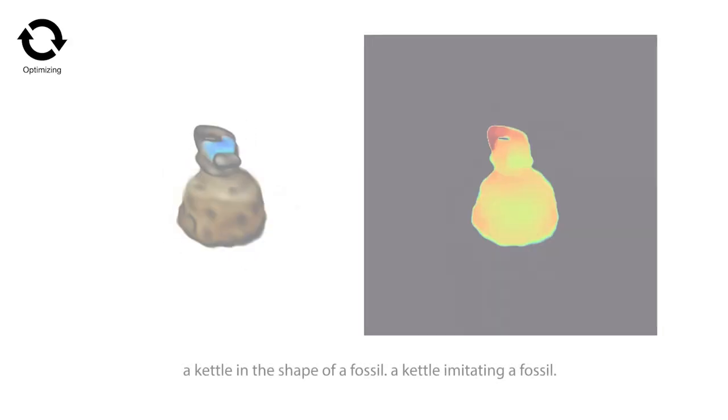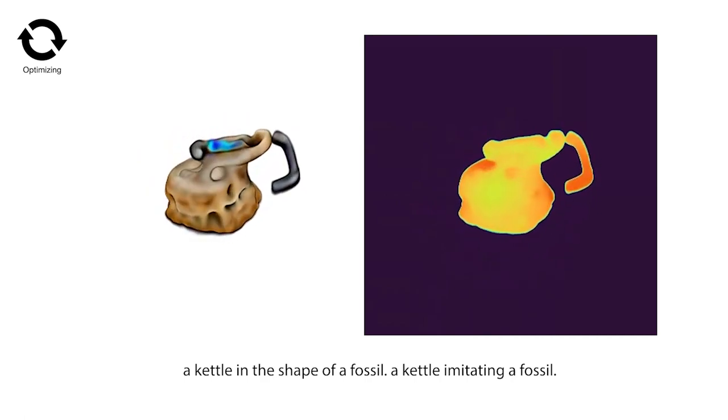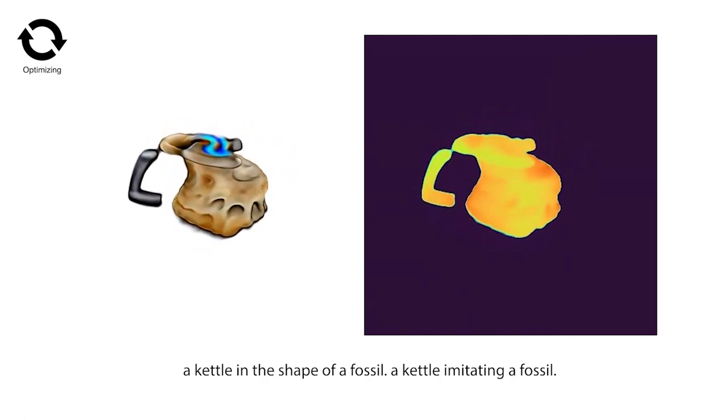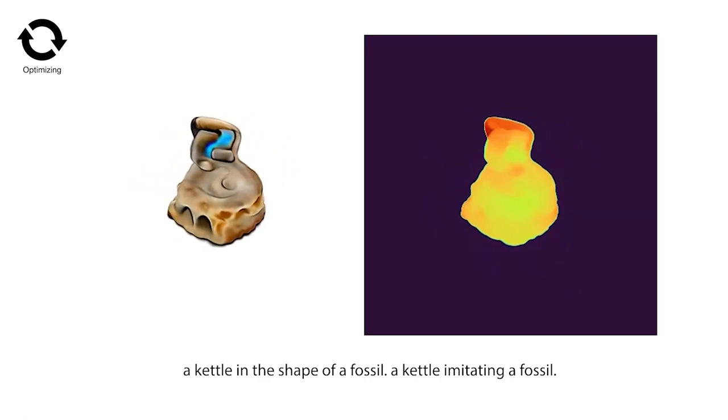On another scene with a caption, a kettle in the shape of a fossil, we show the full progression of training. Dream fields also generate depth maps that are plausible.